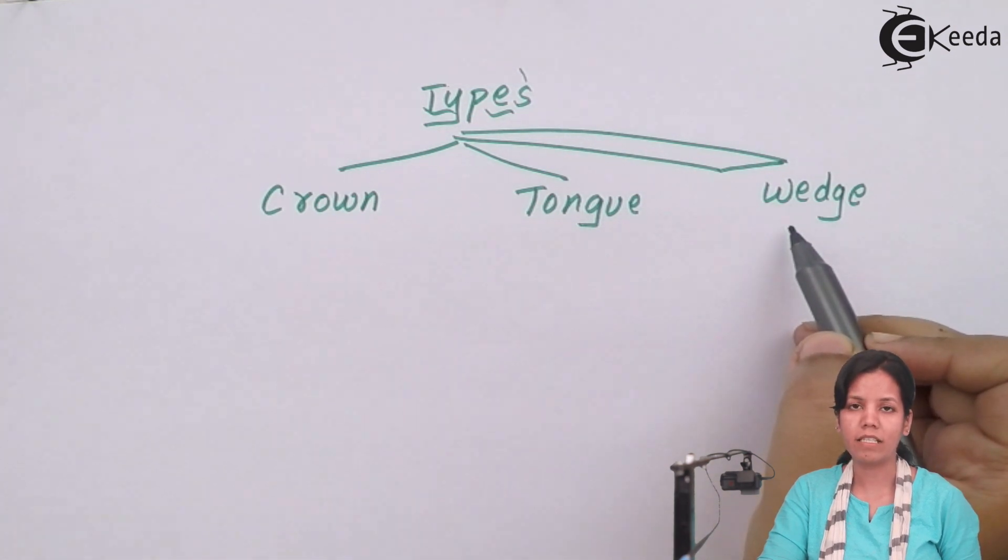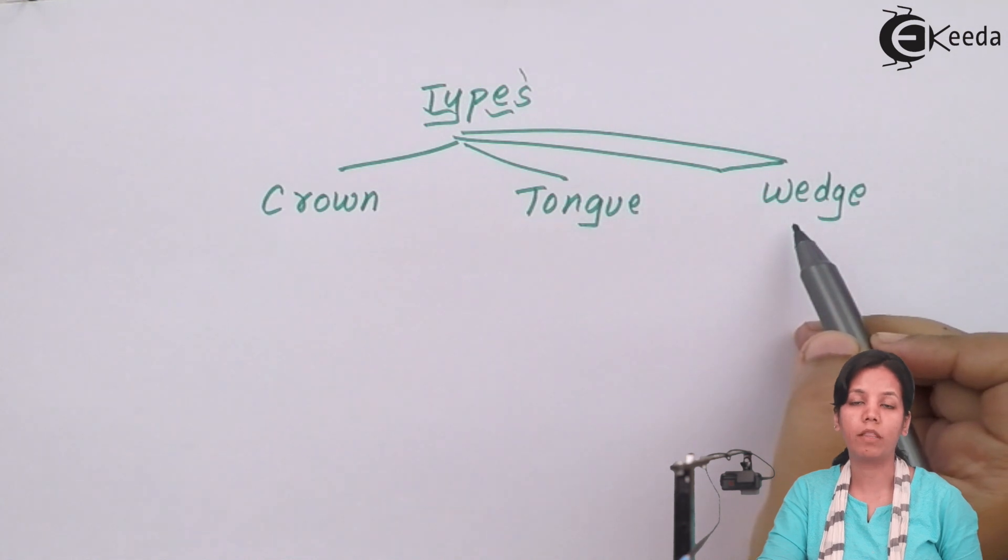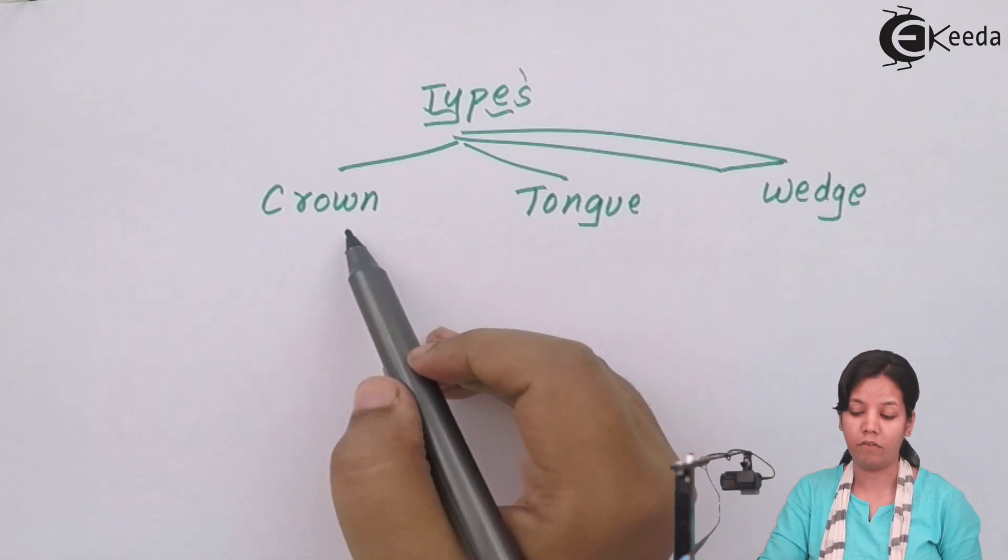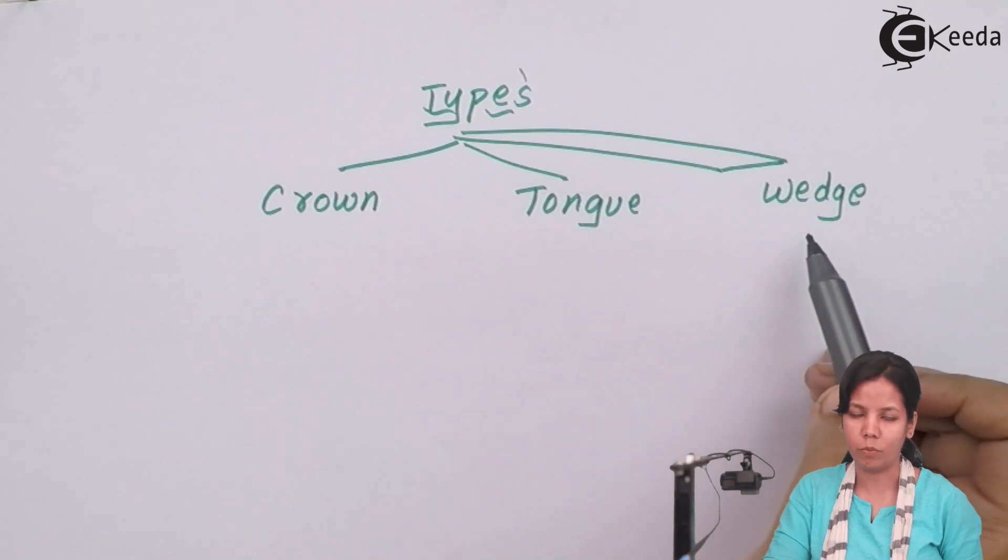In this, the difference is that the scion or the stock part will be different depending upon the plant. If you have to graft a bunion tree, you will be using crown graft, whereas for other trees, tongue and wedge grafting can be used.